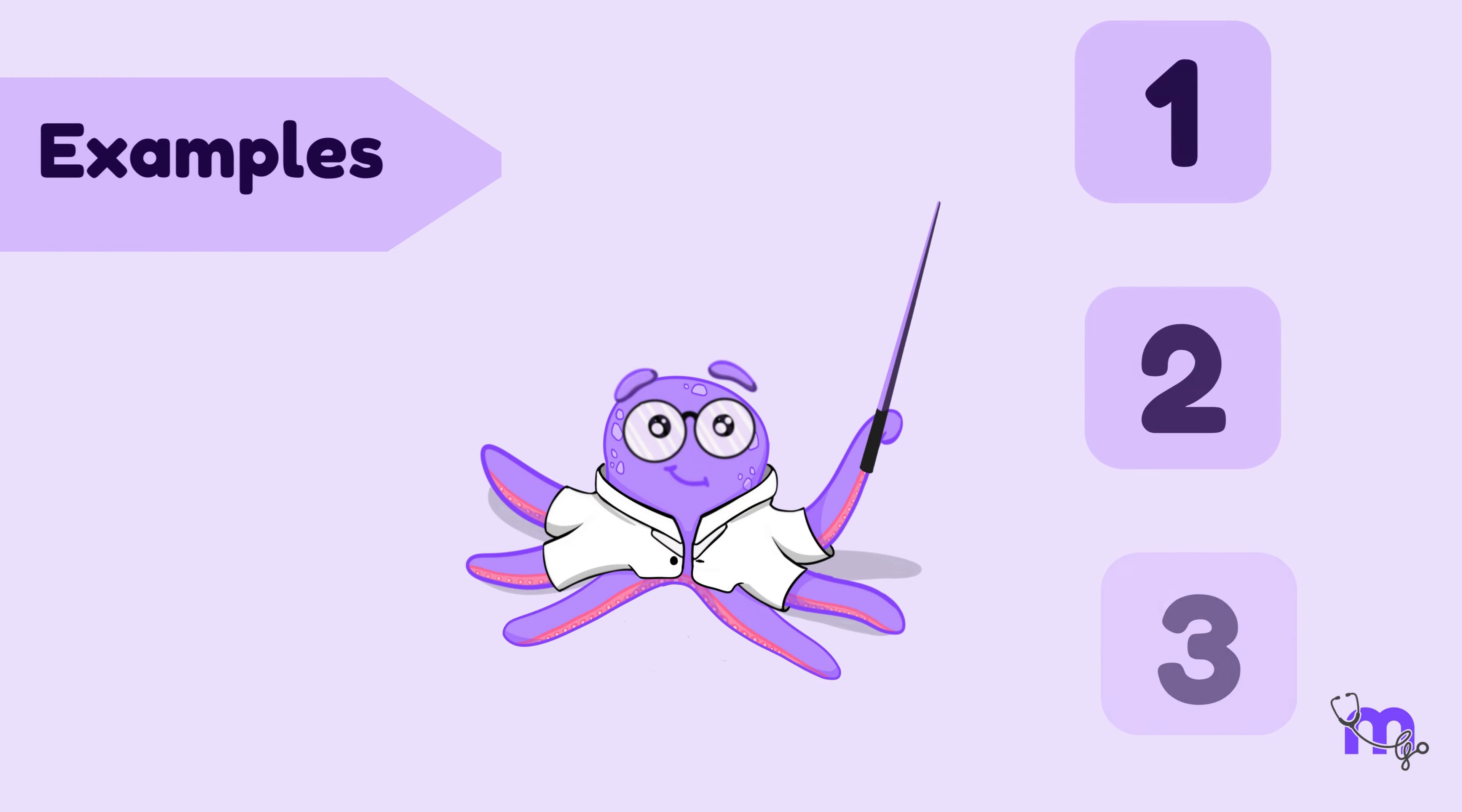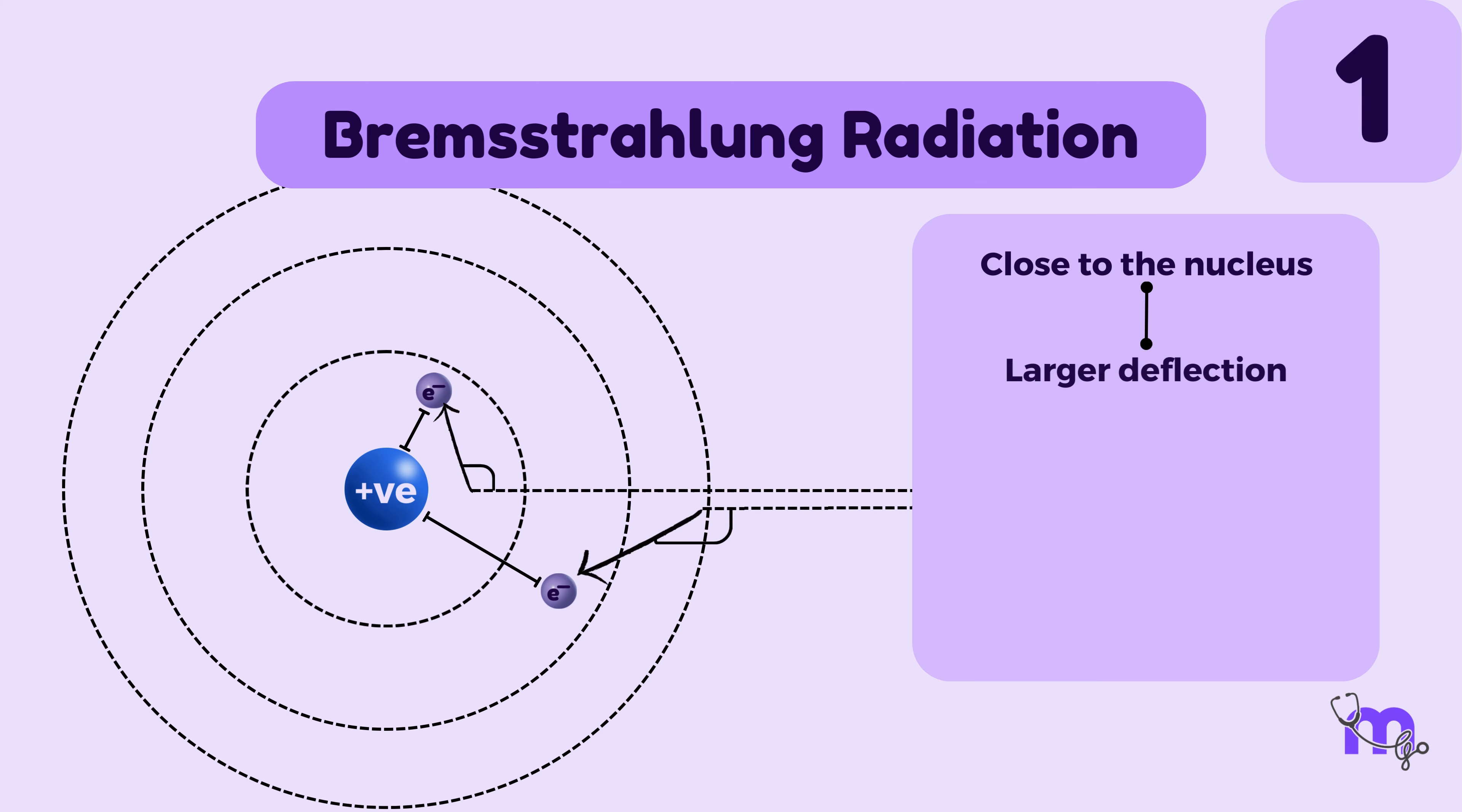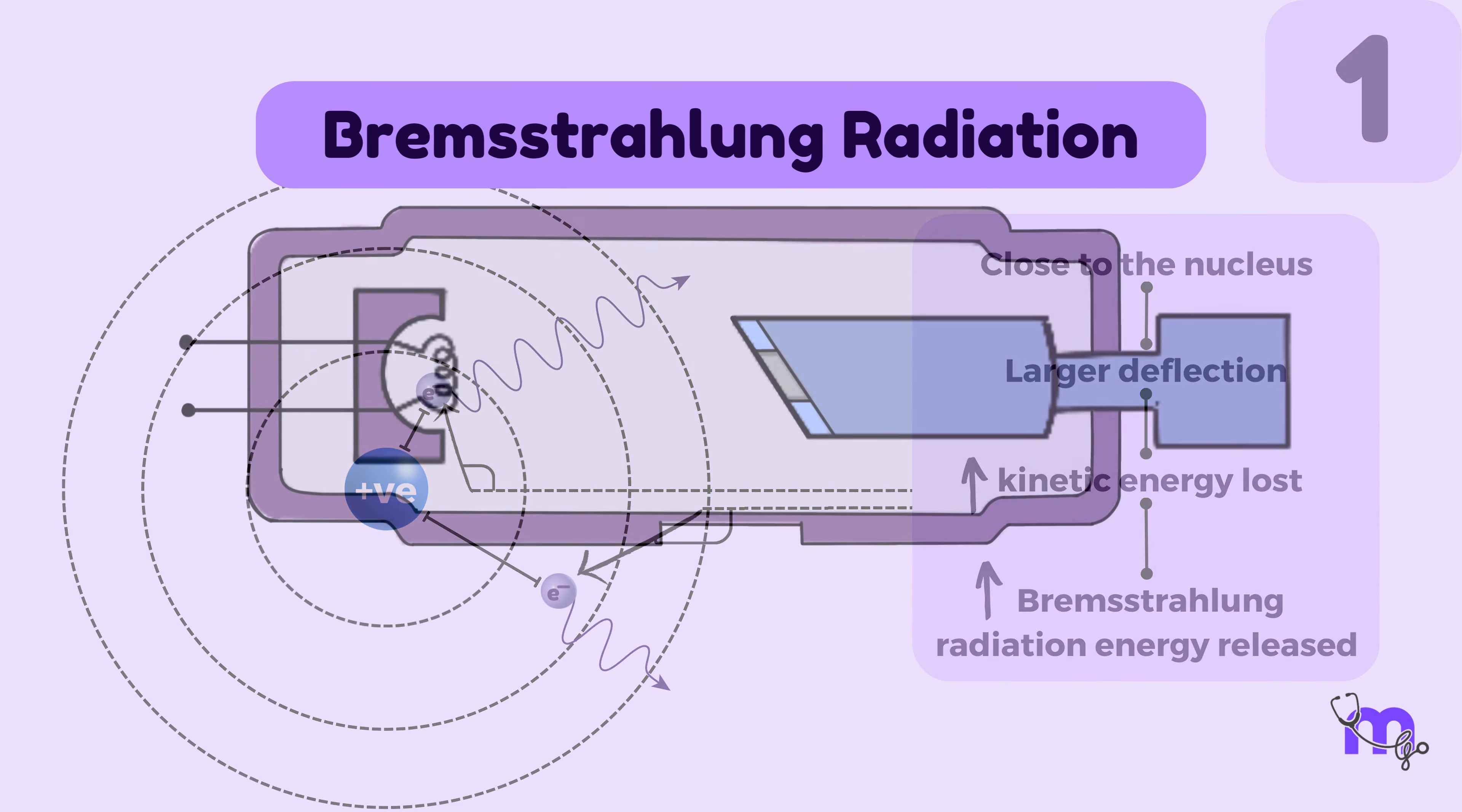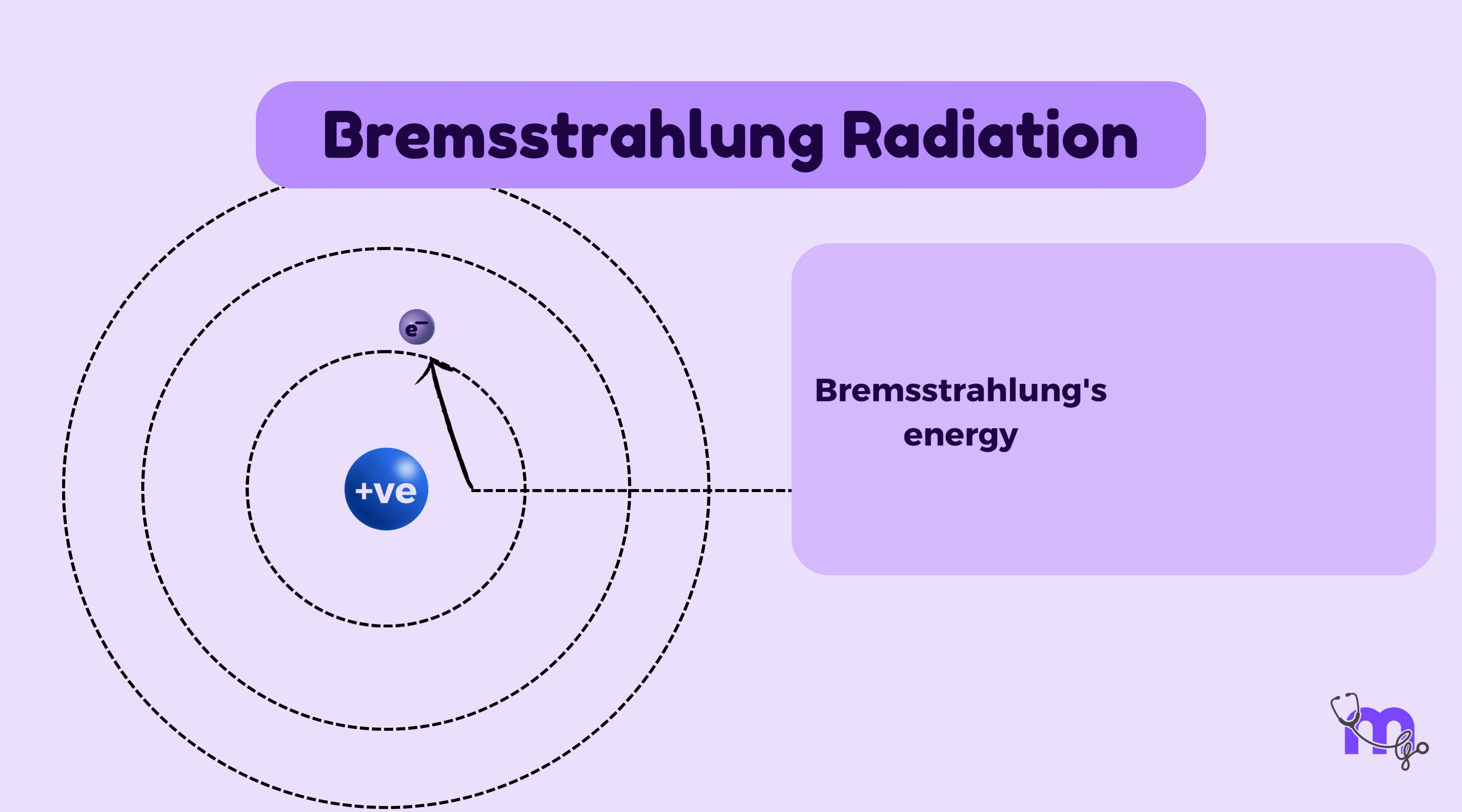Let us better understand this with three examples. In our first example, we have a bombarding electron coming in with a specific kinetic energy and is close to the nucleus. It slows down as it experiences the electromagnetic force and changes its path. The closer the electron is to the nucleus, the stronger the electromagnetic force, the larger the degree of deflection of the electron, the more the loss of kinetic energy, and the greater the bremsstrahlung radiation energy released. In an X-ray tube, large deflections are less likely to happen, so there are relatively few high-energy photons. In short, bremsstrahlung's energy is proportional to the kinetic energy that is lost by the bombarding electron.